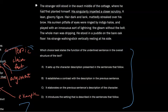So, first sentence, stranger still stood in the exact middle of the cottage where he had first planted himself. Okay, that's kind of just like a description, I guess. His singularity impelled a closer scrutiny. A lean, gloomy figure. This is kind of short, so we're going to kind of extend our sentence sandwich. Because we see that this could be a comma and this, it could be some other form of linking phrases here and that kind of work. Hair darkened link, mattedly streaked over his brow. His sunken pitfalls of eyes were ringed by indigo halos and played with an innocuous sort of lightning, the gleam without the bolt. The whole man was dripping. He stood in a puddle on the bare oak floor, his strange walking stick vertically resting at his side.